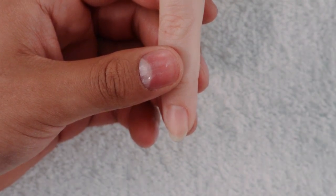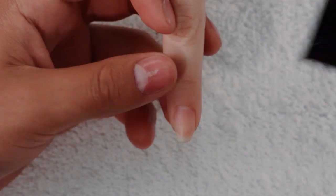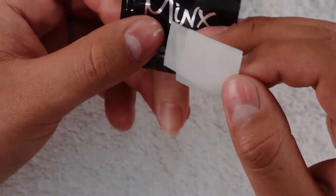First we're going to start with the oil prep now and we're going to clean and remove the oils with an alcohol wipe.